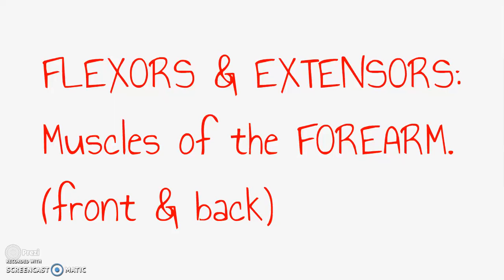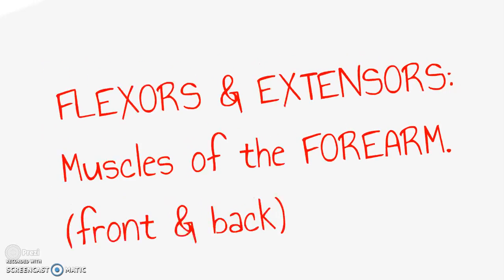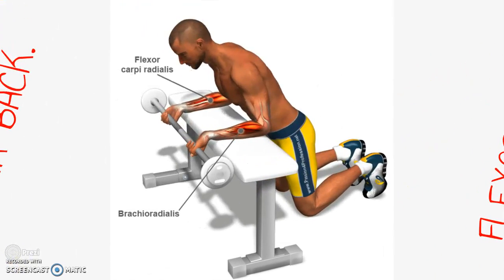Flexors and extensors — in your notes, these would count as one set of muscles. These are the muscles of your forearms. You can see them from the front and back views. In sports, anytime you need a good grip it requires strong forearm muscles — things like swinging a bat or tennis racket and wrestling. You need strong flexors and extensors. This exercise is called a forearm curl.